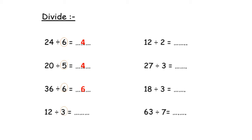Again: 12 divided by 3. Circle the number after the sign — the number here is 3. So I will sing the song of table 3 until I get 12. Close your hand. Sing the song of table 3: 3, 6, 9, 12. So the answer will be four fingers — you are open now four fingers.